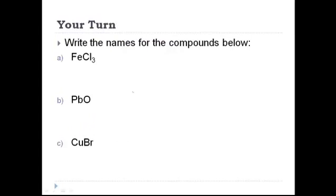Try some of these on your own. Hit pause and come back when you're done. Here are the answers. FeCl₃: Fe is iron, and iron is a transition metal, so I'll leave some parentheses. Chlorine turns into chloride. This subscript three must have originally come from the iron's charge, and the invisible one was the charge for chlorine. So this must be iron(III) chloride.